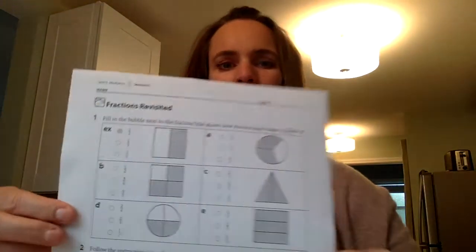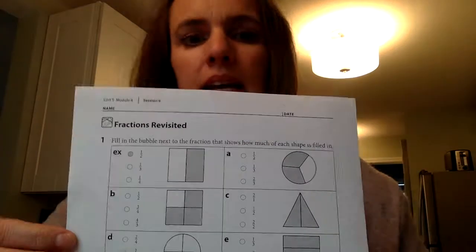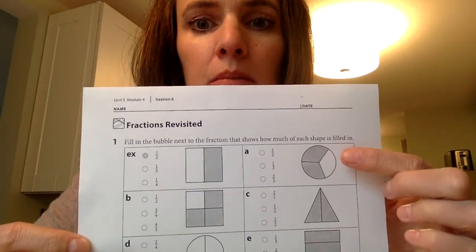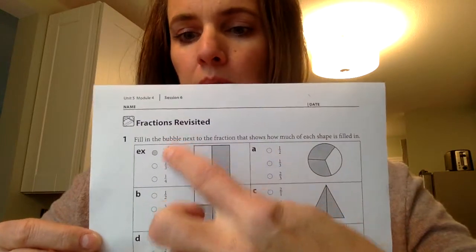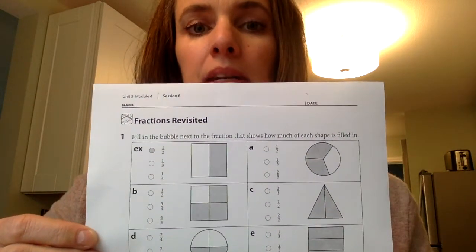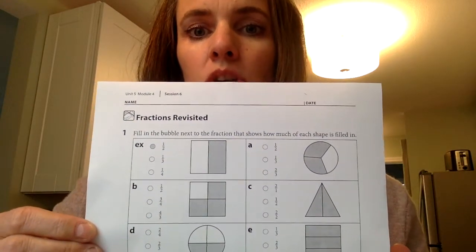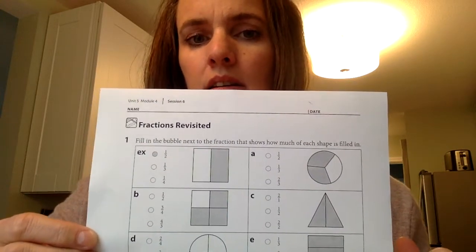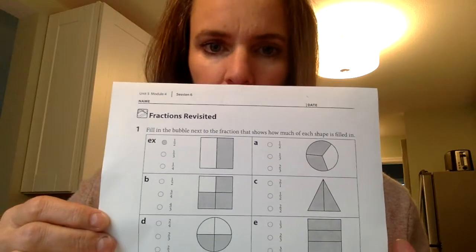So the directions at the top say fill in the bubble. Oh, there's some bubble. Wait, it's backwards for me. Bubbles. Fill in the bubble next to the fraction that shows how much of each shape is filled in. So filled in, like colored in, the gray part.